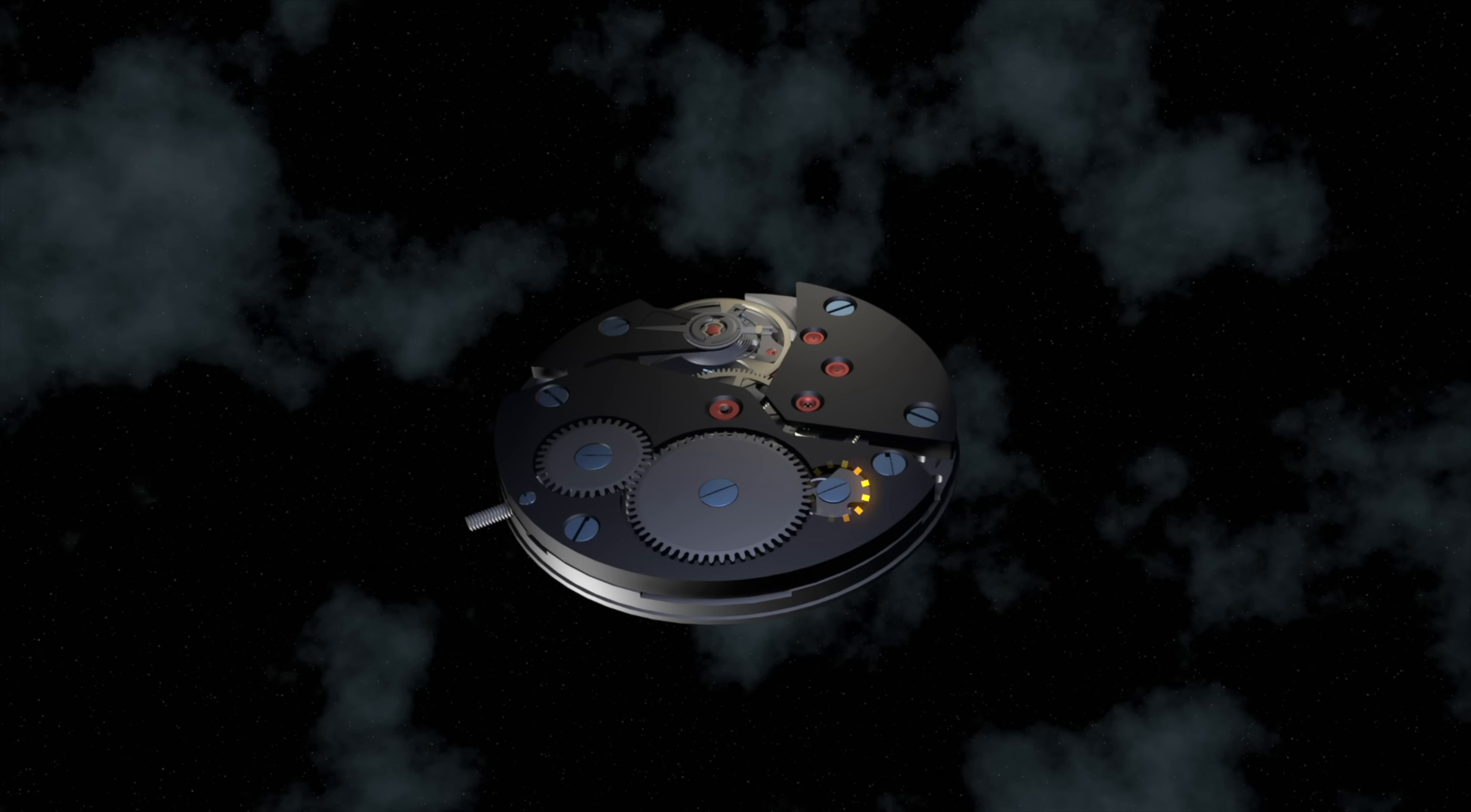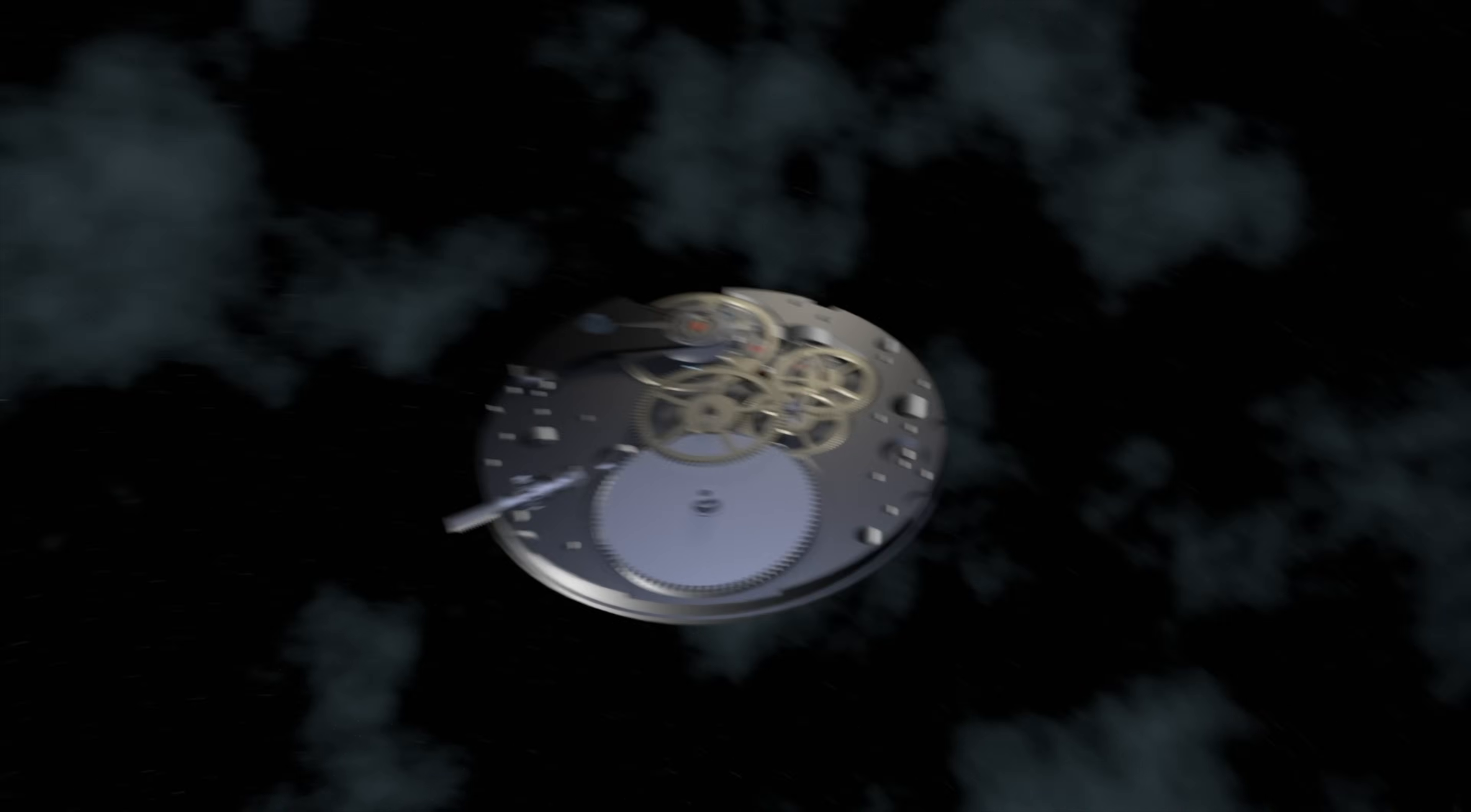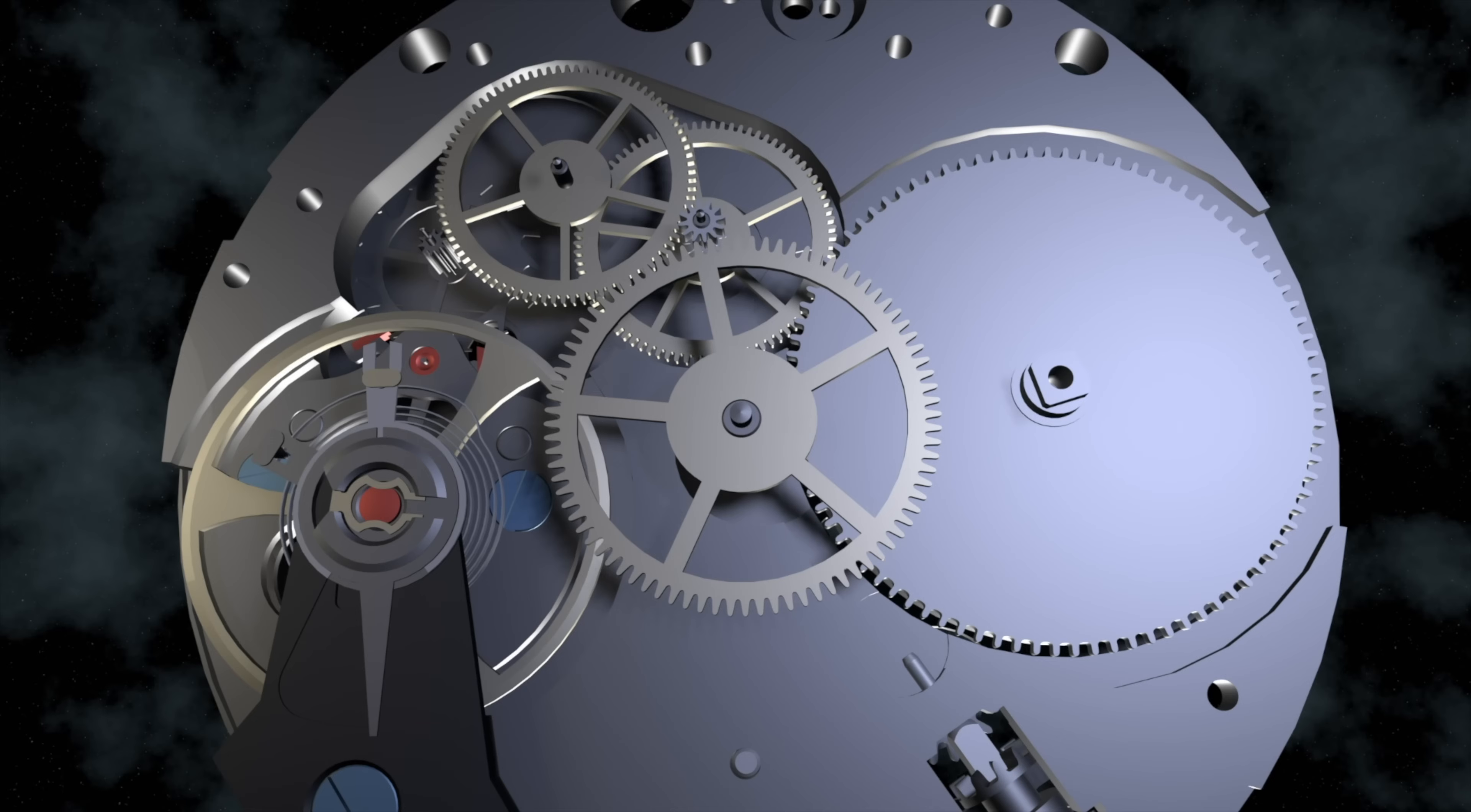So you wind your watch and create energy by coiling the mainspring. That energy is now stored in the barrel. No battery inside.